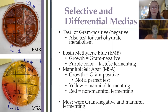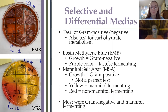As you can see in the top left corner, there was a lot of growth on our EMB plate due to the purple color. In the bottom left corner, most of our MSA plate was yellow. We concluded that most isolates were gram negative and mannitol fermenting; however, that doesn't tell us whether they are antibiotic producers, so we had to complete more tests.